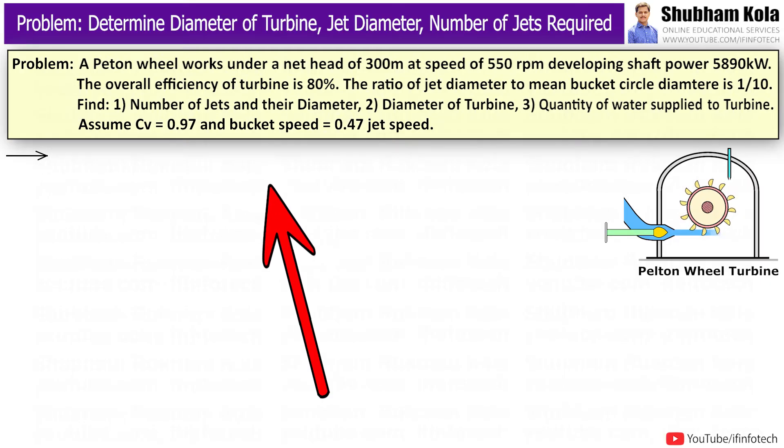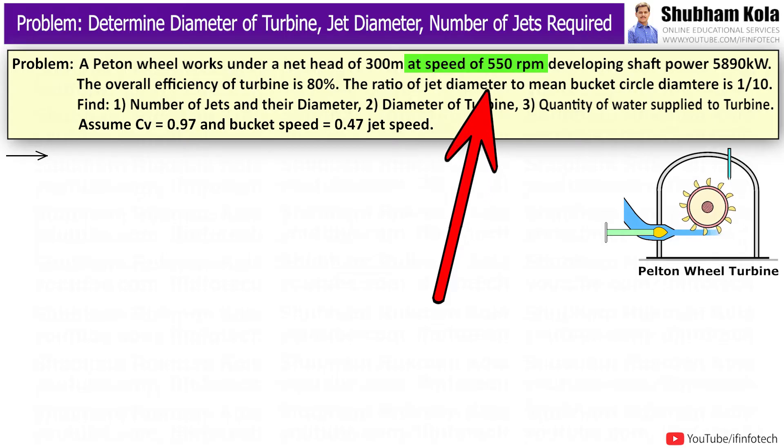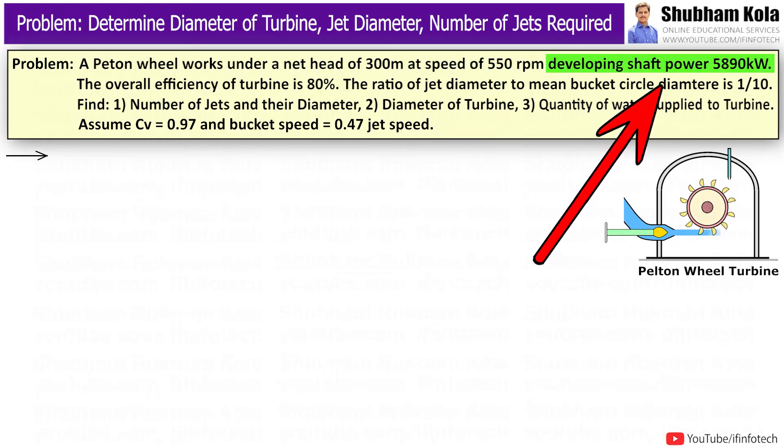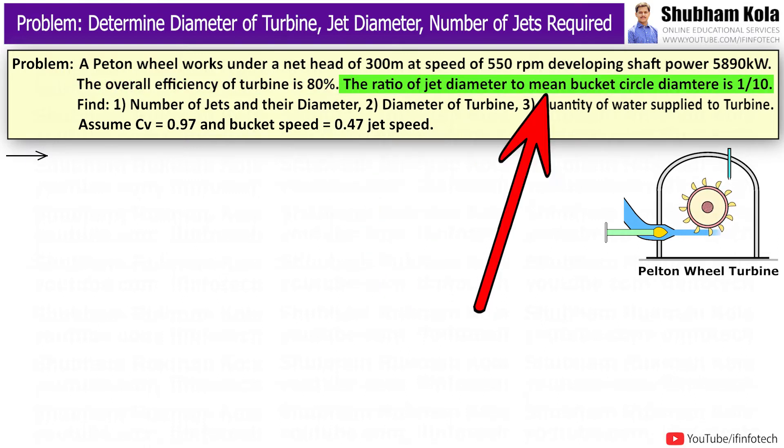The problem statement is: A Pelton Wheel works under net height of 300 meters at speed of 550 RPM, developing shaft power 5890 kW.